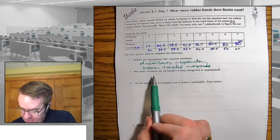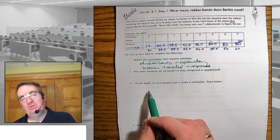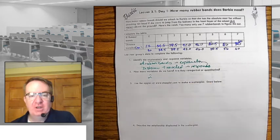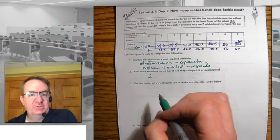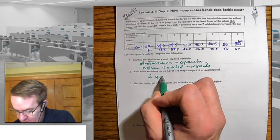And then how many variables do we have in this case? Well, it's two variables. And are they quantitative or categorical? We're dealing with numbers. So this would be quantitative.